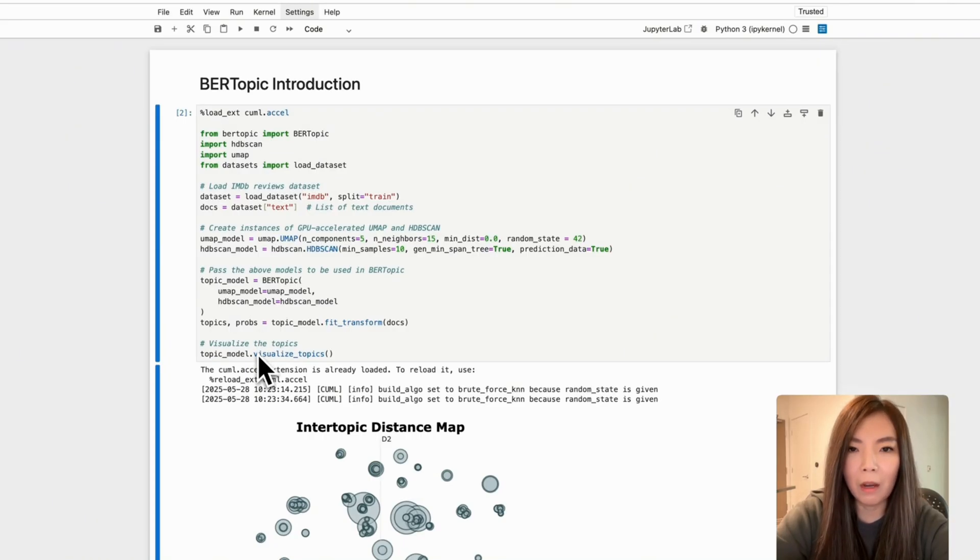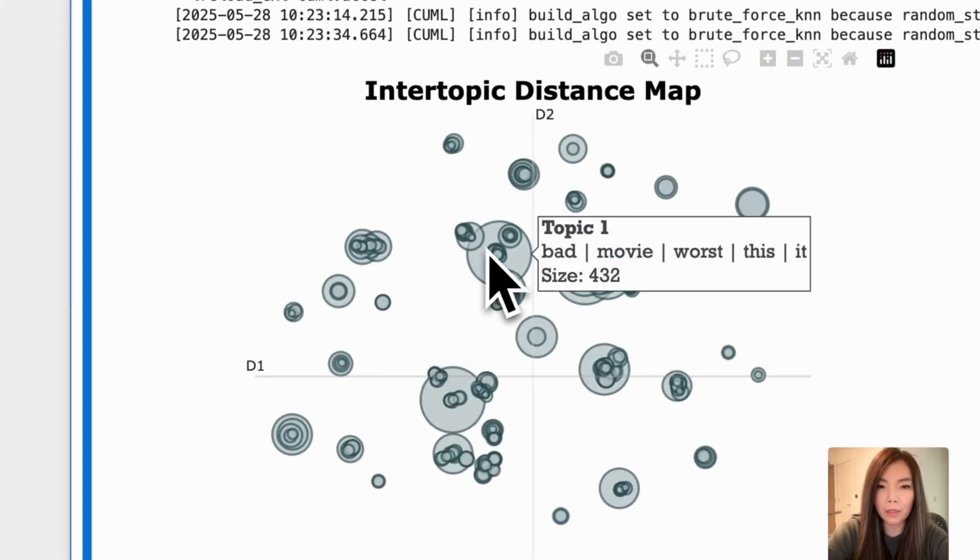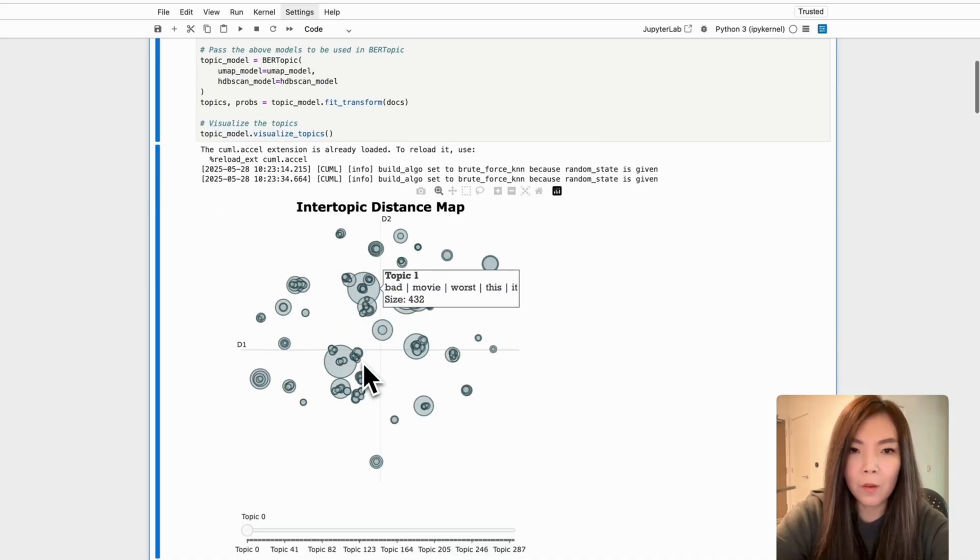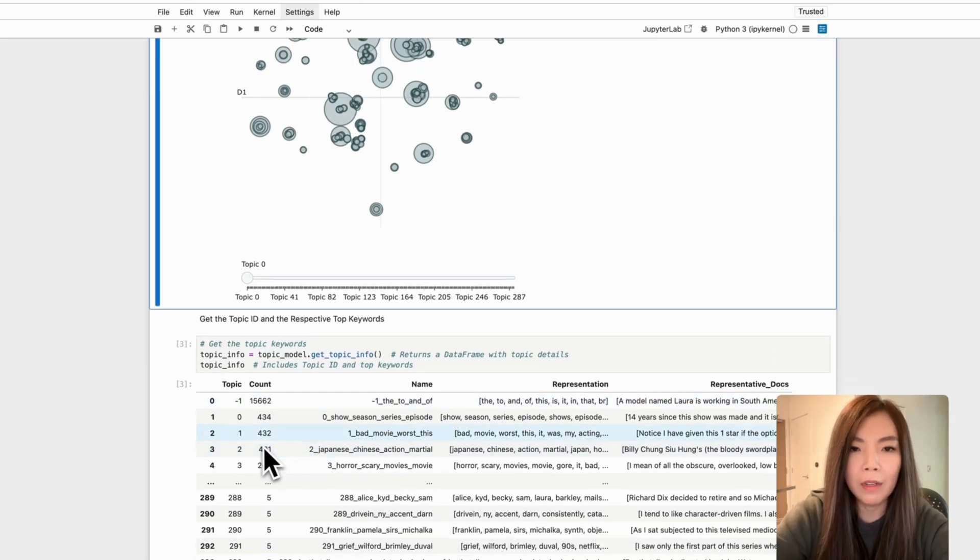We then fit the models to the dataset and extract topics and probabilities. Finally, we visualize the discovered topics using BERTopic's built-in visualization tools. In this intertopic distance map, each circle represents a cluster. If two clusters are far apart, they are distinct. If they are close, they have overlap in meanings. We can also use get_topic_info to extract the topic ID as well as the respective topic keywords.